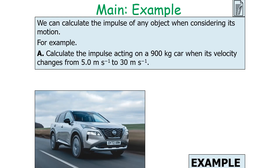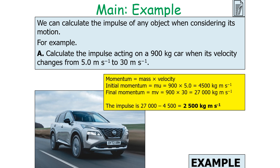Let's calculate the impulse acting on a 900-kilogram car when its velocity changes from 5 m/s to 30 m/s. Initial momentum = 900 × 5 = 4,500 kg·m/s. Final momentum = 900 × 30 = 27,000 kg·m/s. The impulse is the change in momentum, so impulse = 27,000 − 4,500 = 22,500 kilogram meters per second.